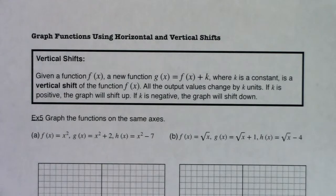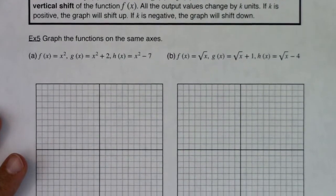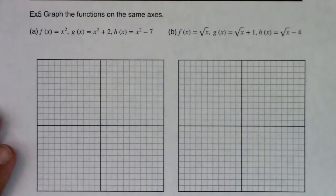So let's take a look at a few examples. We're going to look at two of our toolkit functions, the square function, the parabola, and the square root function, and we're going to shift these graphs vertically. So let me move this up so we have our graphs in view.